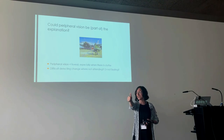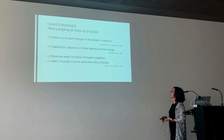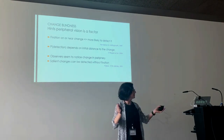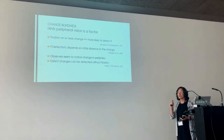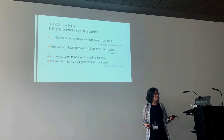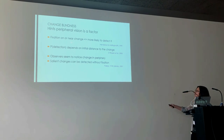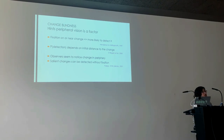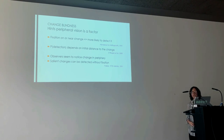And yet, peripheral vision is very rich — you get a lot of information out there. With change blindness, there are some hints that peripheral vision is a factor. Wherever you're pointing your eyes, much of the scene is in the periphery. Some researchers have shown that if you fixate on or near a change, you're more likely to detect it. How likely you are to detect the change depends on how far away you are when it occurs. Sometimes observers seem to notice the change in the periphery, and really salient changes — like big color changes — can be detected without ever fixating them.